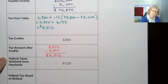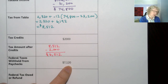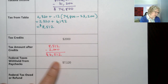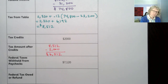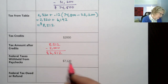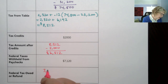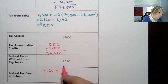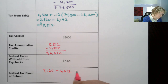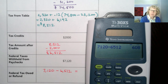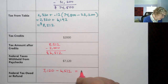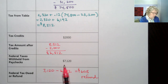From their paychecks throughout the year, they had withheld $7,120. Since they withheld more than they owe, they're going to get money back — this is a refund. Setting it up as withholdings minus what you owe: $7,120 − $6,512 gives us $608 as a refund, because they already paid more than they actually owed.